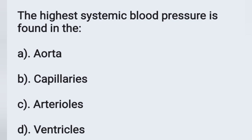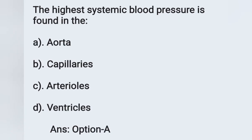Next question: the highest systemic blood pressure is found in which vessel? Options: (a) aorta, (b) capillaries, (c) arterioles, (d) ventricles. The highest systemic blood pressure is found in the aorta. Option A is the correct answer.